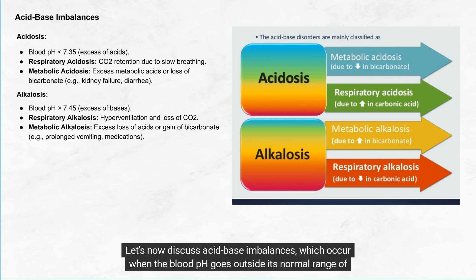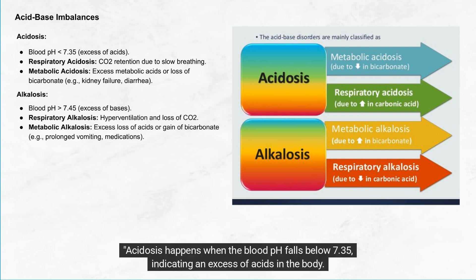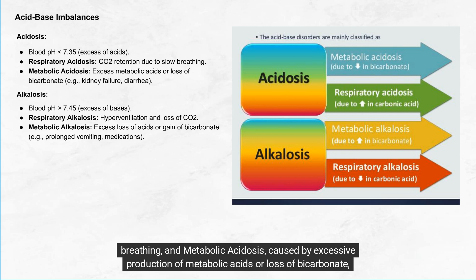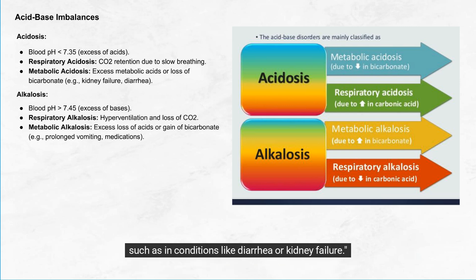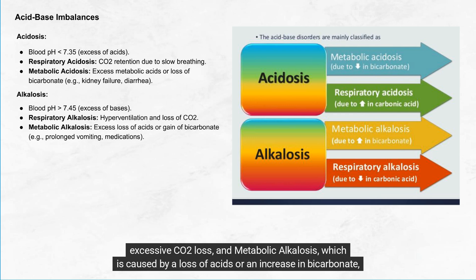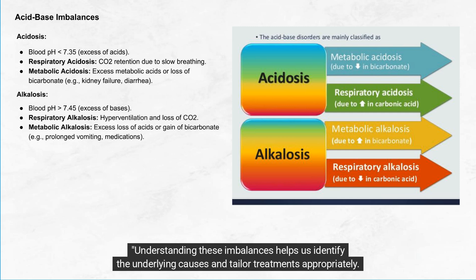Acid-base imbalances occur when blood pH goes outside its normal range of 7.35 to 7.45. Acidosis happens when blood pH falls below 7.35, indicating excess acids. It can be caused by respiratory acidosis — CO2 retention due to slow or shallow breathing — or metabolic acidosis, caused by excessive production of metabolic acids or loss of bicarbonate, such as in diarrhoea or kidney failure. Alkalosis occurs when blood pH rises above 7.45, indicating excess bases. Respiratory alkalosis results from hyperventilation and excessive CO2 loss, while metabolic alkalosis is caused by a loss of acids or an increase in bicarbonate, such as from prolonged vomiting or certain medications. Understanding these imbalances helps identify underlying causes and tailor treatments appropriately.